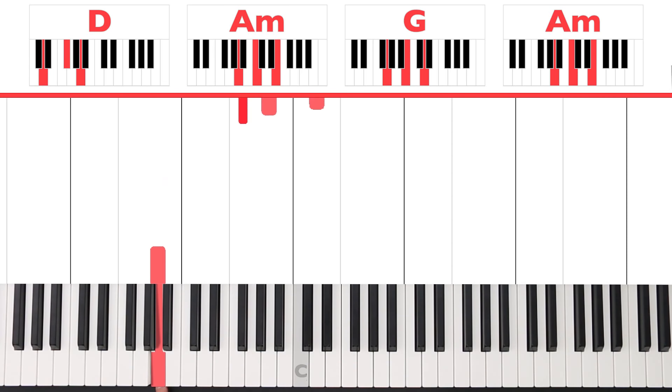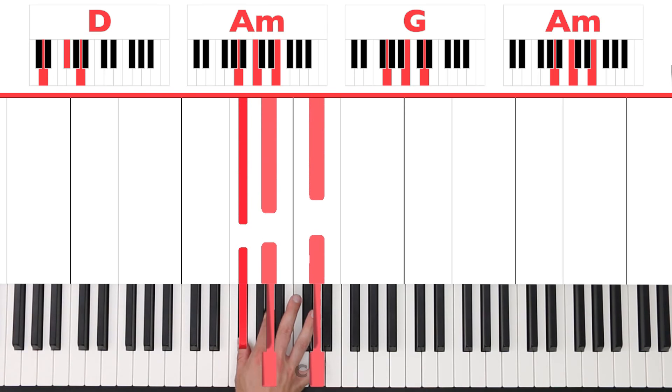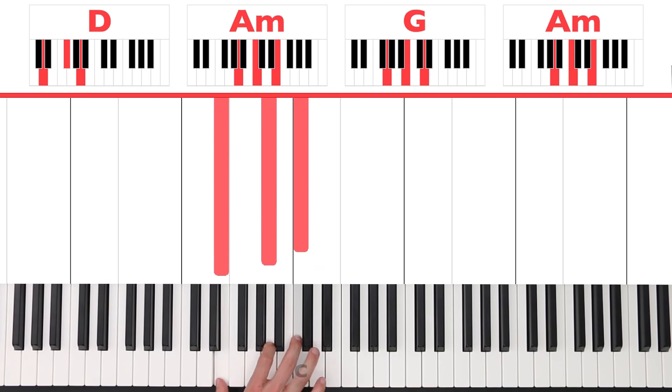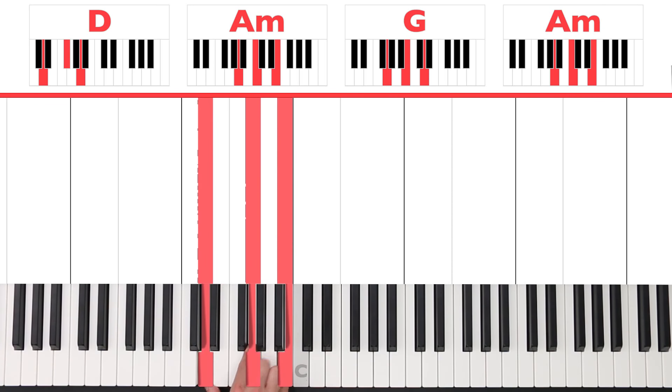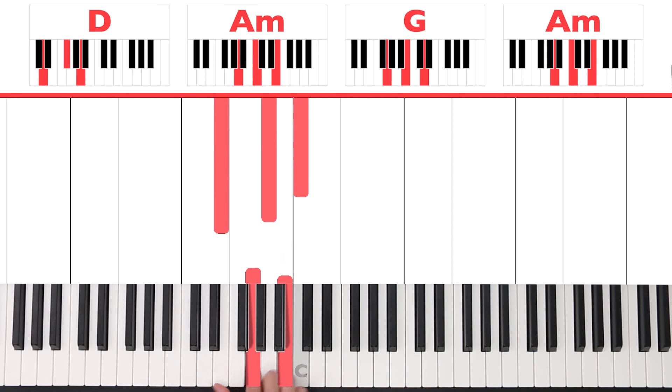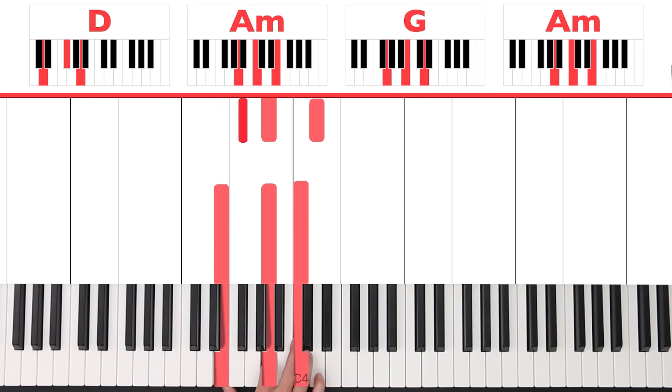But now we have to play something with that right hand as well. Now, we're going to be playing F sharp, A and D for the D octave, followed by E, A and C for A minor, and then D, G, B for G, and E, A, C. Like this.